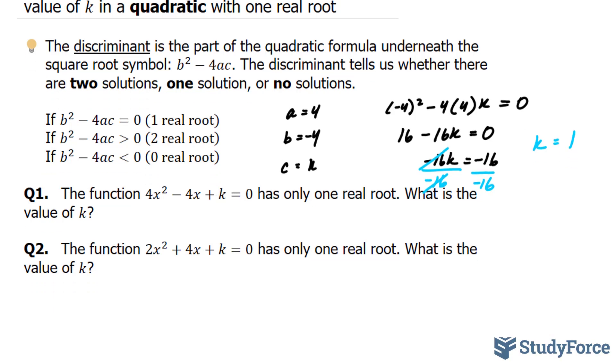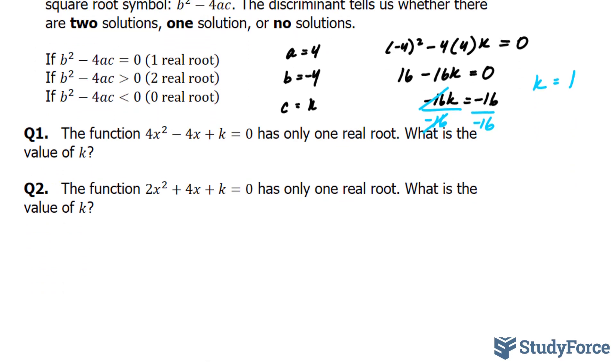We'll use the same methodology for question 2. Once again, our a term is 2, our b term has coefficient 4, and our c term is k.